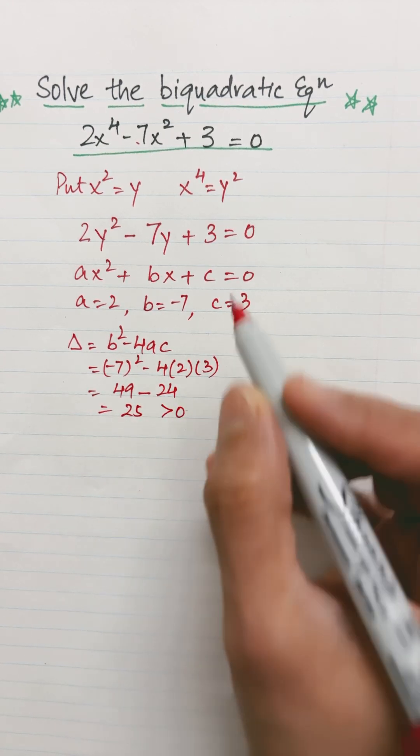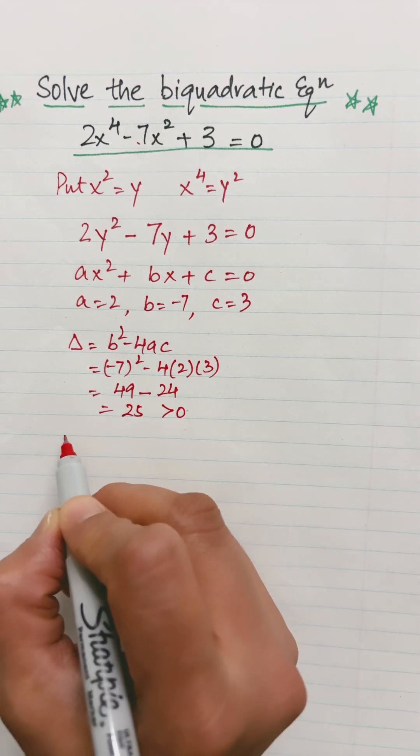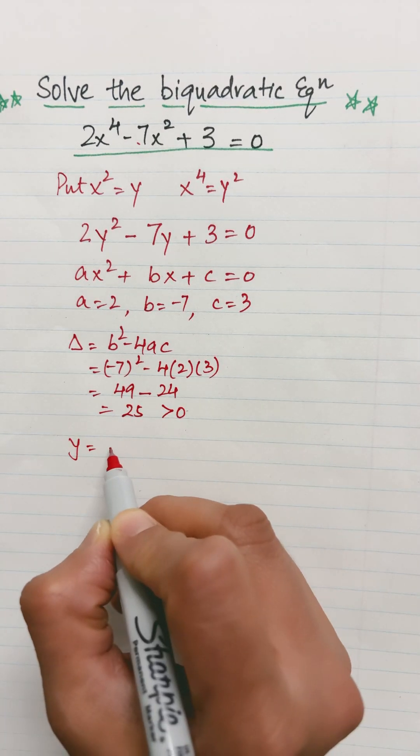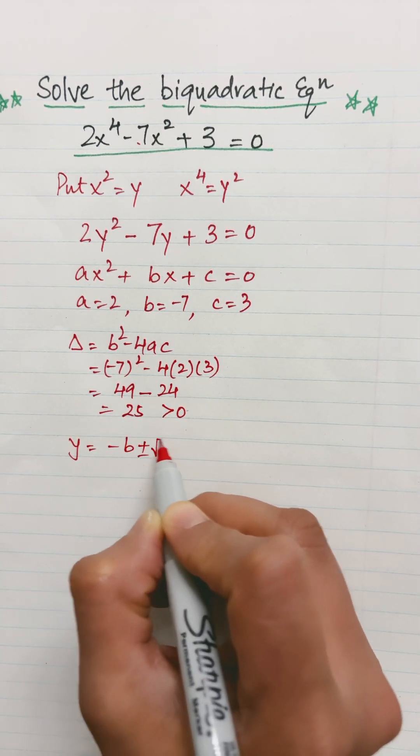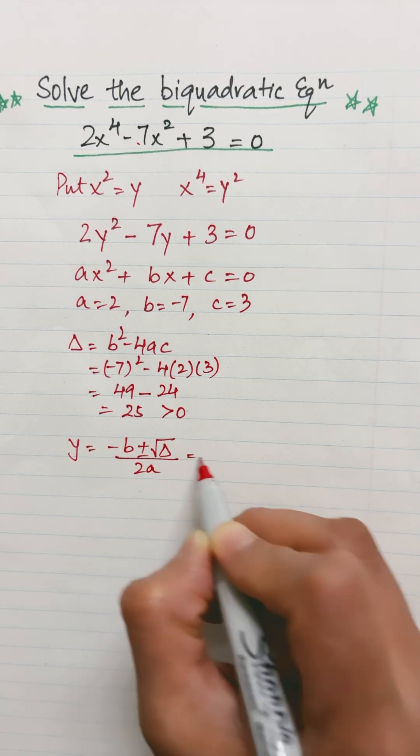...is 25, is greater than 0. So this equation will have two real distinct roots. What will be those roots? They will be equal to y equals minus b plus minus square root of discriminant over 2a.